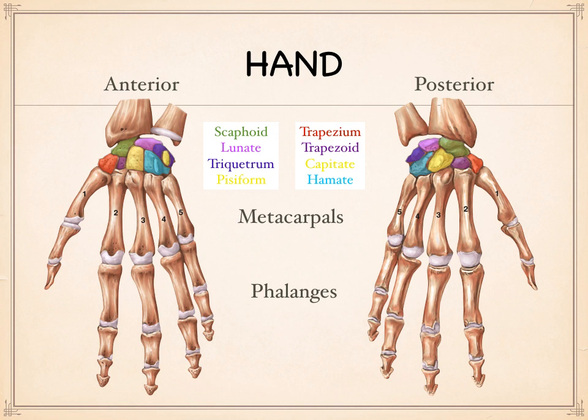Those are the bones of the upper limb. Much more effective if you study with the bones themselves, but this should give you a solid foundation for identifying the features and bones that are important in the upper limb.